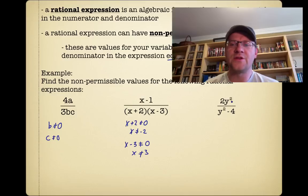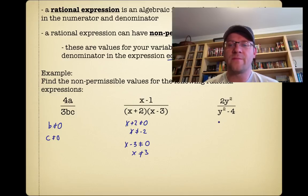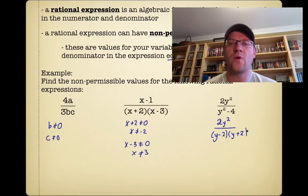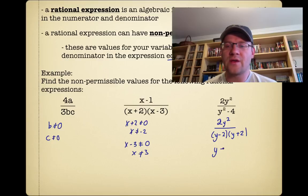Finally, 2y squared over y squared minus 4. The bottom isn't factored yet, so we're going to do that — it'll make it easier to determine the non-permissible values. Hopefully you recognize y squared minus 4 as a difference of squares, so we get (y minus 2)(y plus 2), and that means y cannot equal 2 or negative 2.